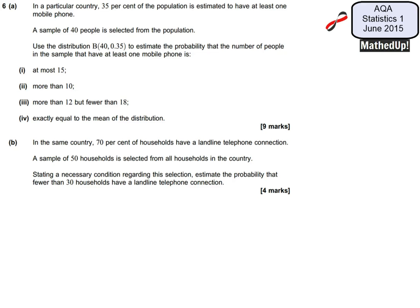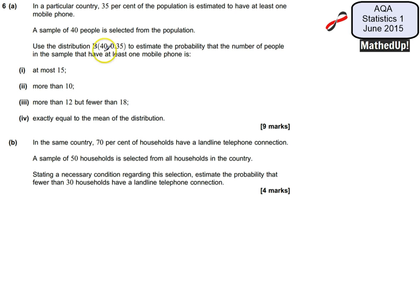This is question number six from the AQA Statistics 1 June 2015 exam paper. In this question, we're told that in a particular country, 35% of the population is estimated to have at least one mobile phone. A sample of 40 people is selected from the population, and we're going to use a binomial distribution with n=40 and p=0.35 to estimate various probabilities.